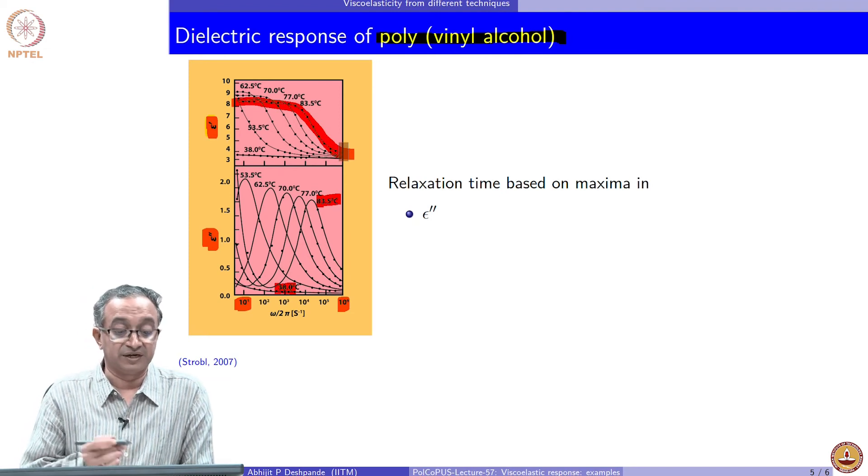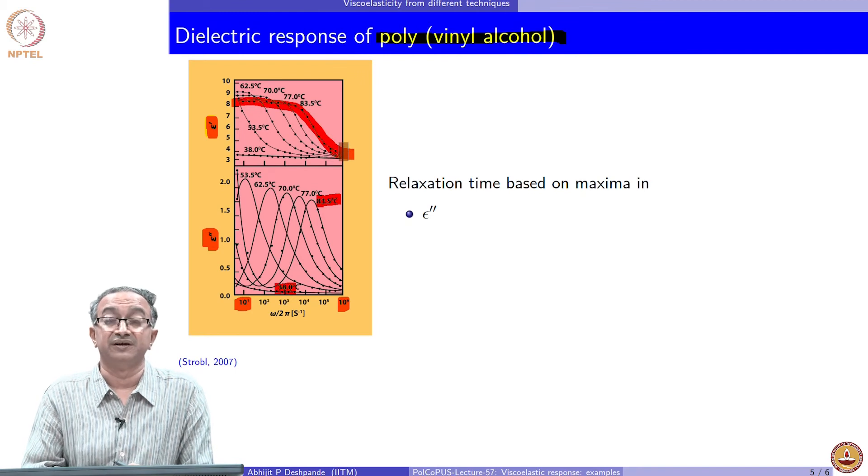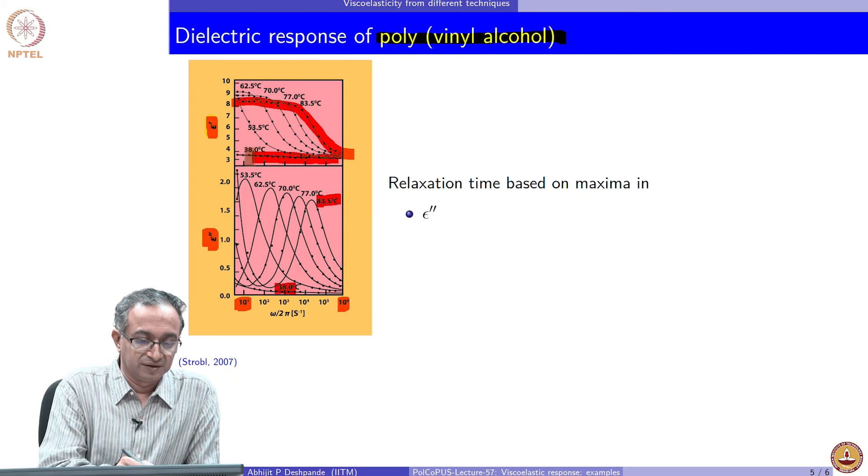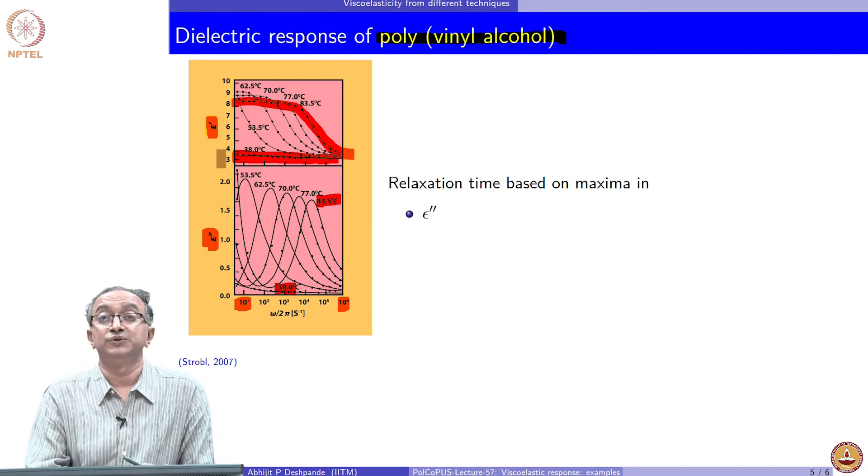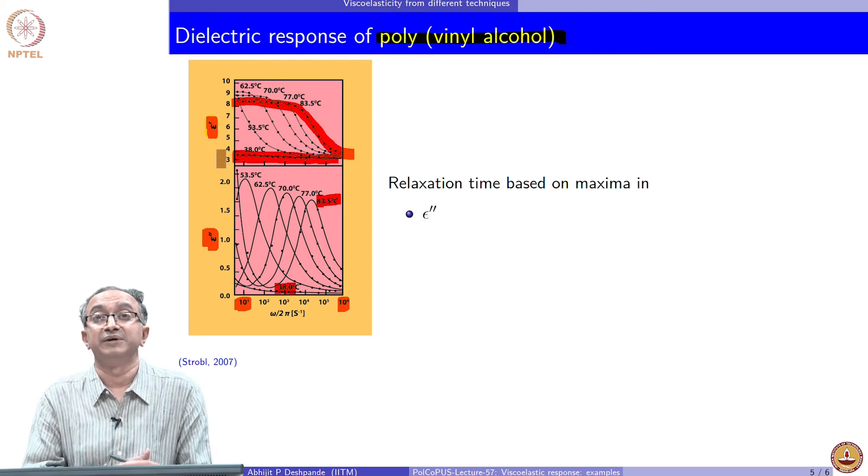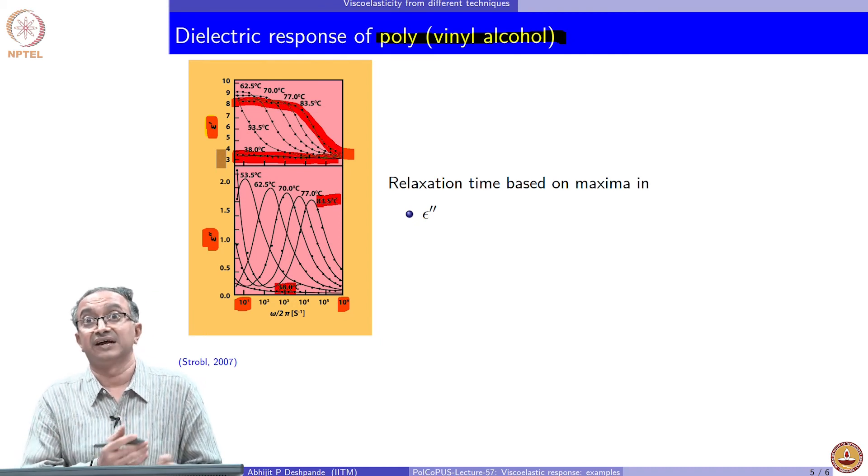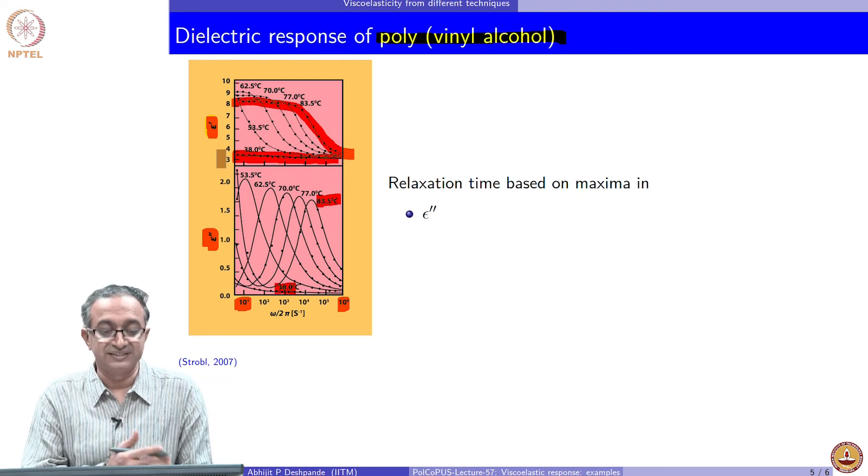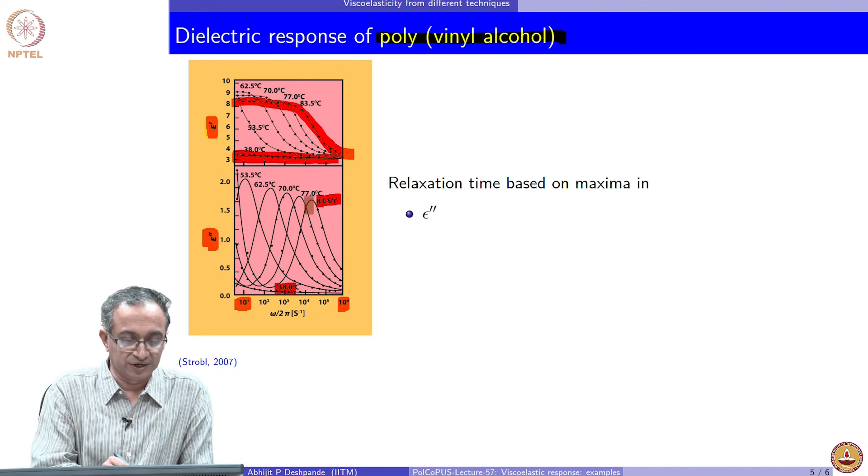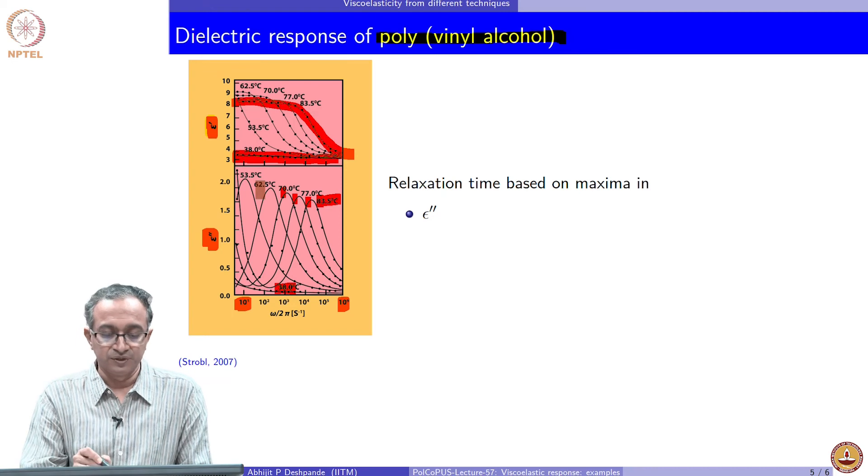And so, but as we change the temperature and as we go to lower and lower temperature, what happens is the overall dipoles actually lose the ability to orient themselves because macromolecules themselves become very inflexible because of reaching the glassy state. So clearly what you can see is we again have a glass to rubber transition and that is also represented by the peak in dielectric response.